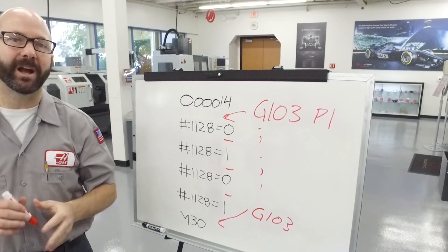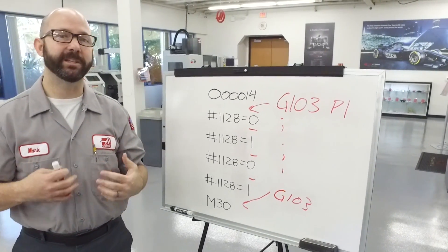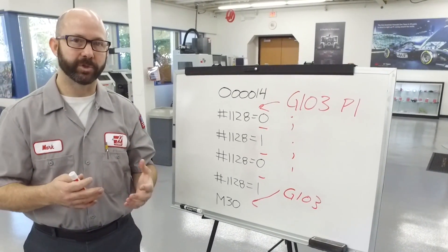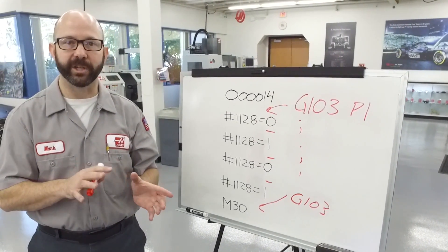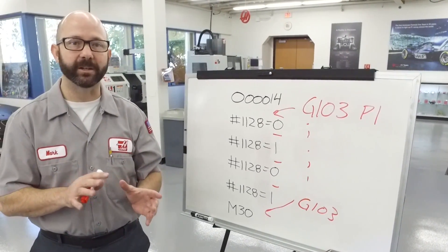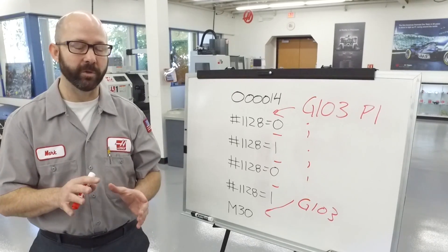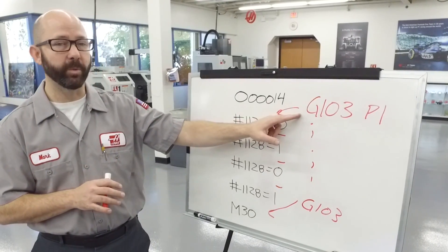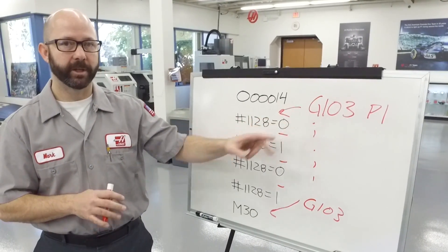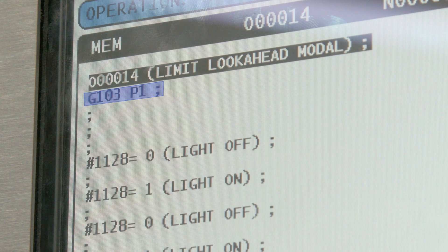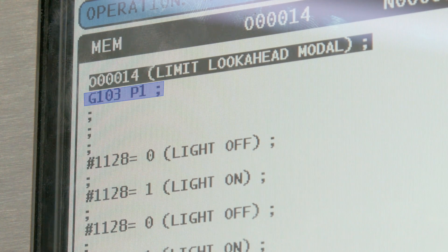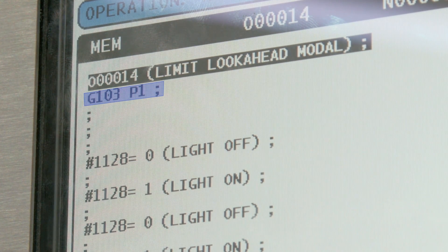Now we know that cutter compensation needs look ahead. So if you try and run a G41 or G42 cutter compensated move while in G103, you're going to get an alarm. I've added a G103 P1 to my program which is going to modally block look ahead.